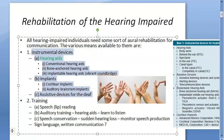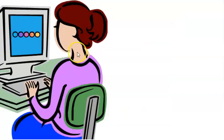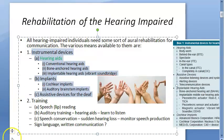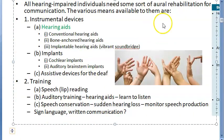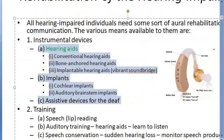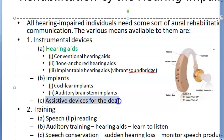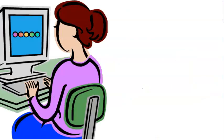Now we have finished the training section. We are moving on to instrumental devices. Instrumental devices can be just three things: hearing aids, implants, and assistive devices for the deaf.